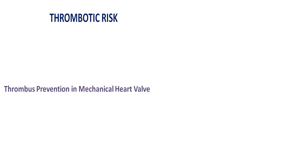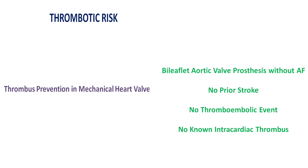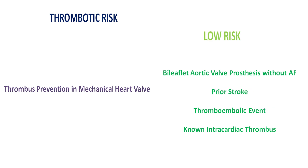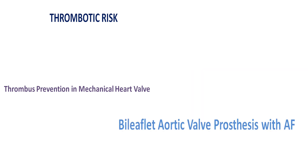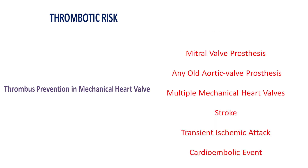In patients under warfarin for mechanical heart valve thrombosis prevention, low risk patients include those with a bileaflet aortic valve prosthesis without atrial fibrillation, no prior stroke or thromboembolic event, and no known intra-cardiac thrombus. Bileaflet aortic valve prosthesis with atrial fibrillation is moderate risk. Any mitral valve prosthesis, any older aortic valve prosthesis, multiple mechanical heart valves, or history of stroke, TIA, or cardioembolic events are high risk.